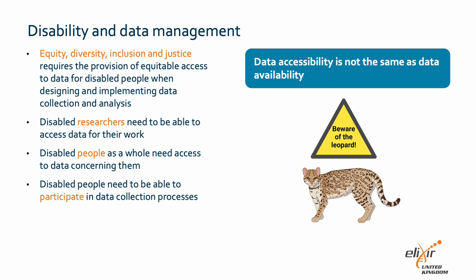Disability access is a vital component of considering EDIJ in data management. Disabled people should have equitable access to data throughout the data cycle, from collection through to analysis, sharing and reuse. Disabled researchers need to be able to access data to do their work effectively, so a lack of consideration of this aspect of data management will inadvertently exclude disabled researchers or make their jobs more challenging.